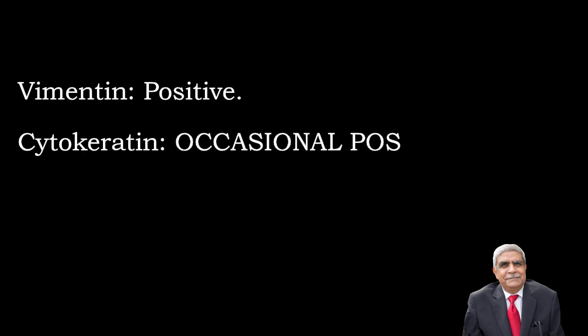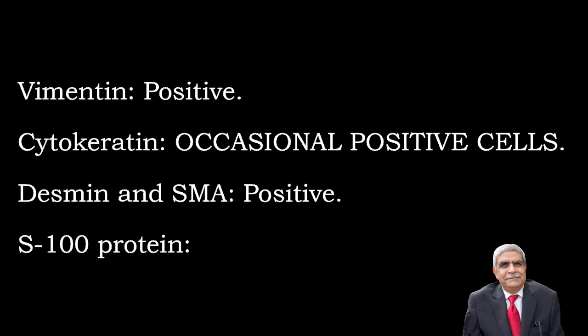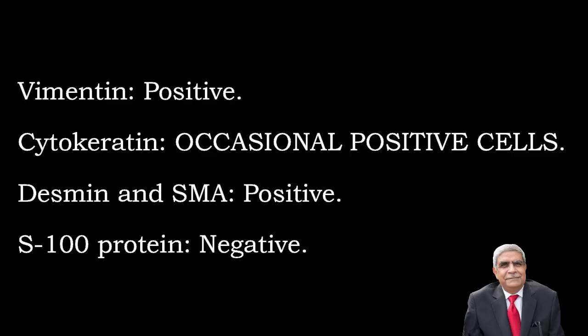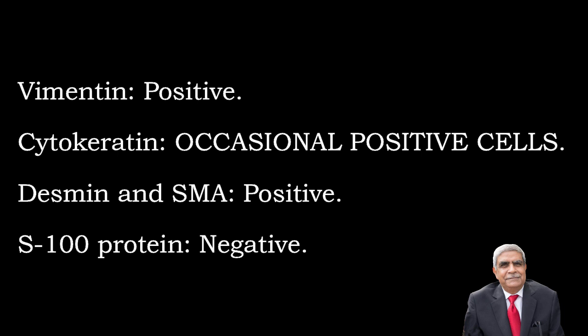Microscopically, leiomyosarcoma is composed of interlacing bundles of smooth muscle cells with perinuclear halos, coagulative necrosis, and mitotic figures greater than five per ten high power fields; nuclear atypia is present. Immunohistochemistry: vimentin positive, cytokeratin occasionally positive, desmin and SMA positive, S100 protein negative. Other sarcomas of the vulva include embryonal rhabdomyosarcoma, malignant fibrous histiocytoma, angiosarcoma, hemangiopericytoma, Kaposi's sarcoma, alveolar soft part sarcoma, liposarcoma, and epithelioid sarcoma.